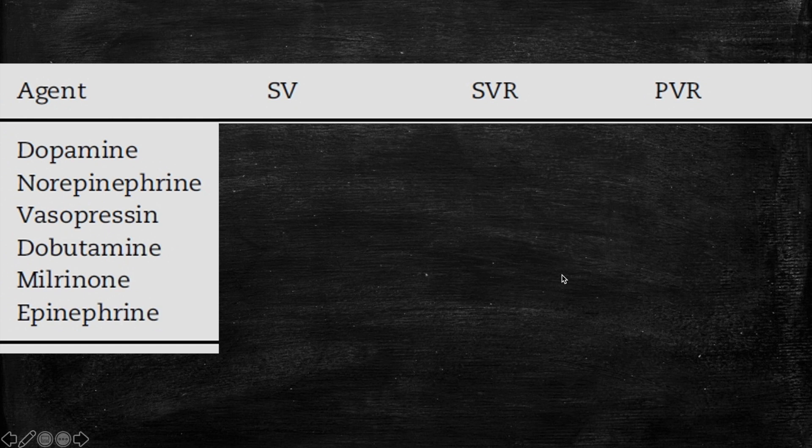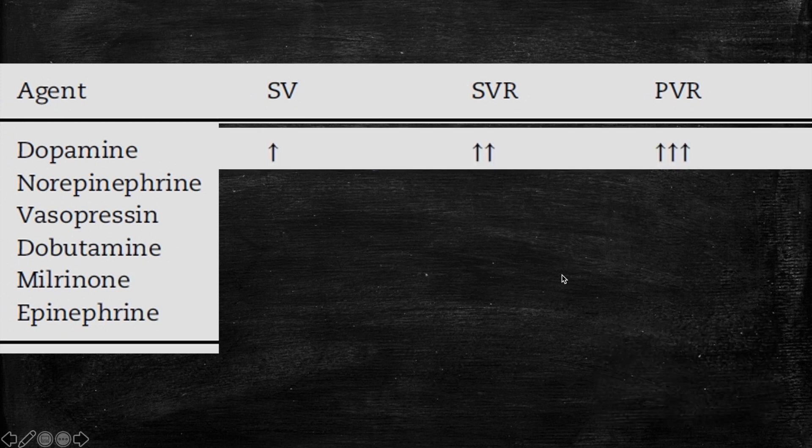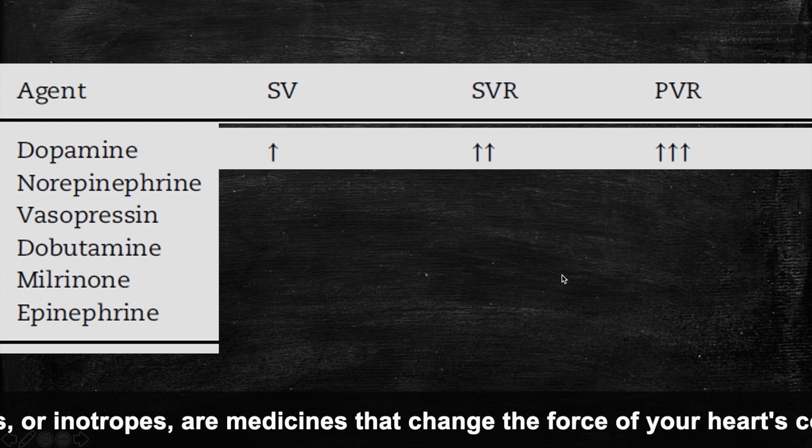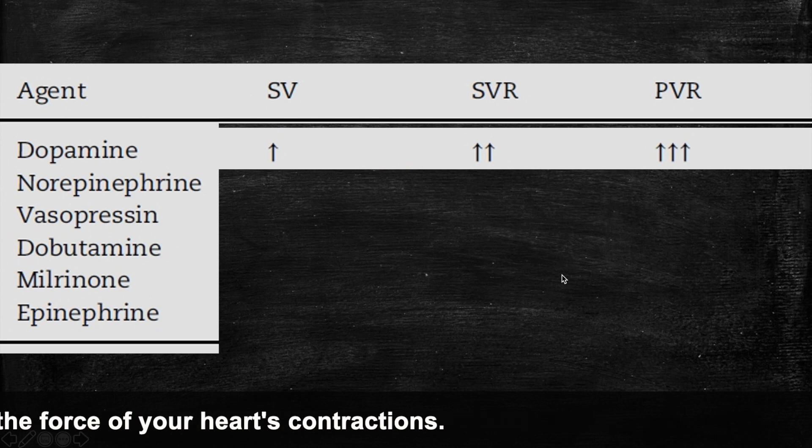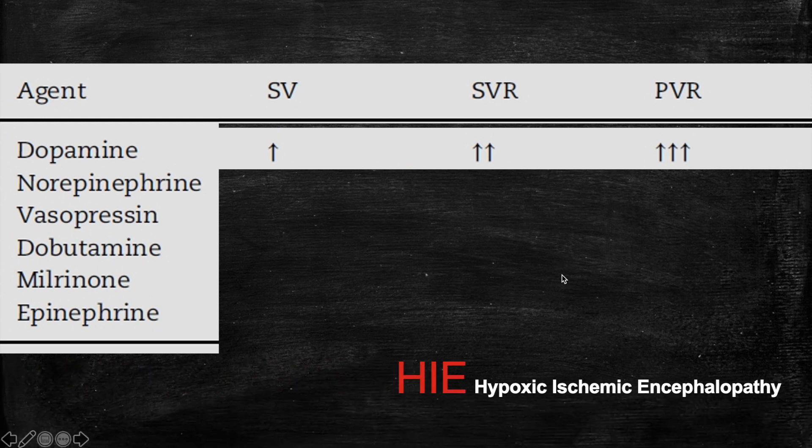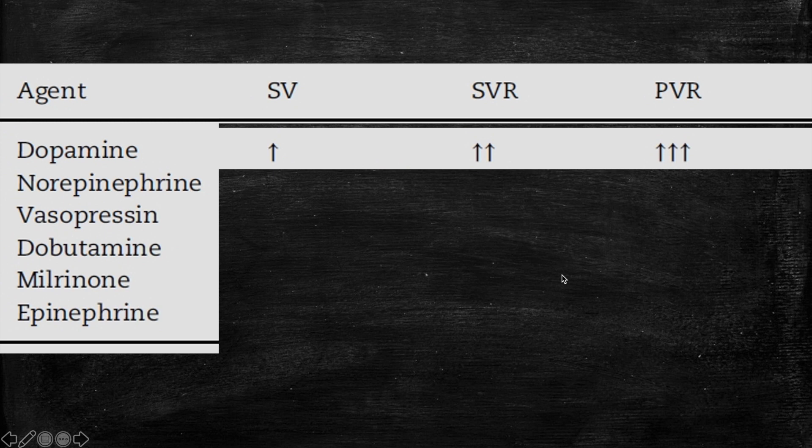The first agent is dopamine. Obviously dopamine has an inotropic effect for which it will increase the stroke volume as it will increase the contractility of the heart. It will also increase your SVR and it will increase your PVR as well. For example, if you have an HIE baby with RV dysfunction, then dopamine probably is not the best agent as it will increase your pulmonary vascular resistance and will increase the afterload on the RV. So it will increase your SVR and it will fix your blood pressure. However, it's probably not helping the right ventricle that has to work against the high afterload.